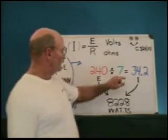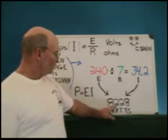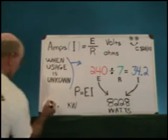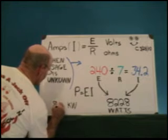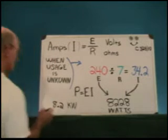We go back to wattage is equal to volts times amps. You multiply these two, you get 8,228 watts. That is 8.2 kilowatts.